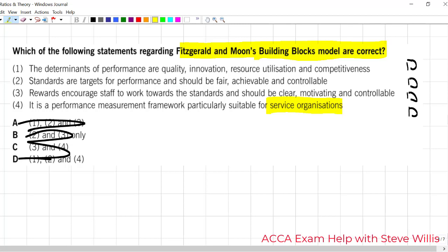Number one, the determinants of performance. Remember, we have the results and the drivers or determinants. Quality, that one is good. Innovation, resource utilization, and competitiveness. Competitiveness, no no no. It's innovation is what we want. So, that one goes out.